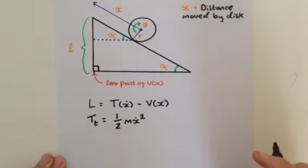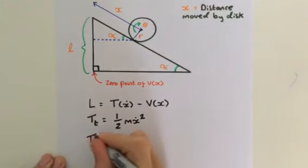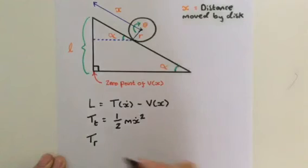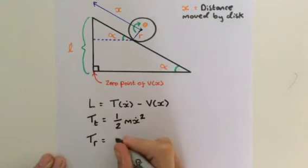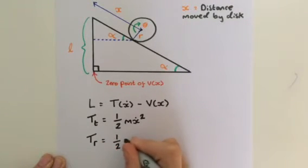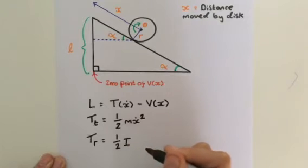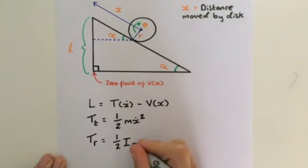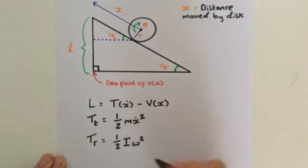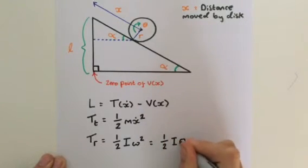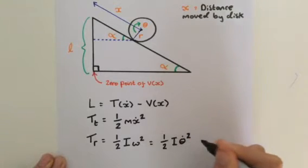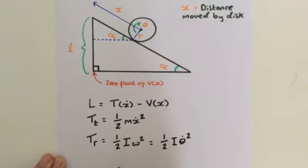What about the rotational kinetic energy? T subscript r is going to equal a half I, where I is inertia, and we're going to multiply that by omega squared. Omega is the angular velocity. We can also write this as a half I theta dot squared in derivative notation.